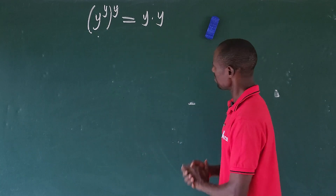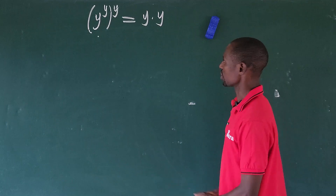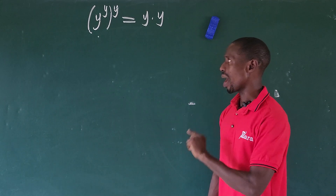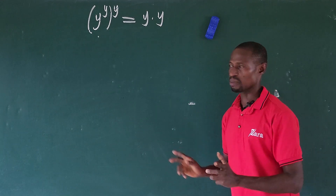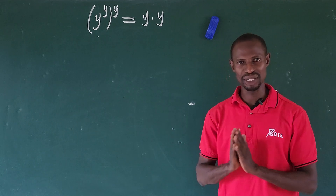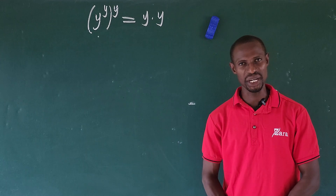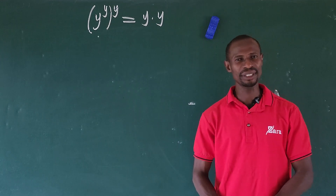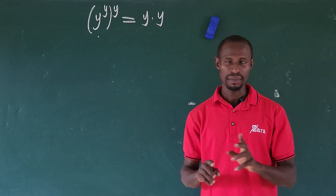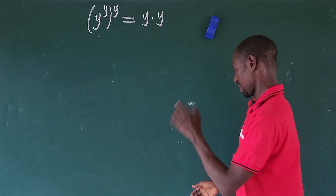Welcome, we have another math challenge on the board. How do we solve this question? The question is: (y^y)^y = y times y. What is the value of y that will satisfy this equation? Looking at this equation, we are going to solve for two roots that will satisfy it.